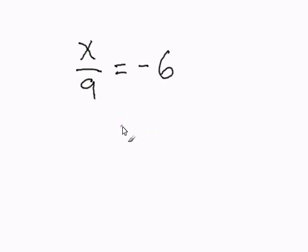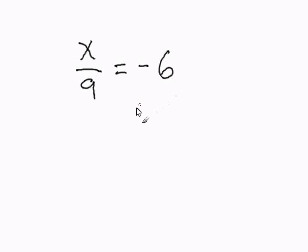Solving single step equation by multiplication. In this problem, we have x over 9 equals to negative 6. Now we must get x by itself to solve for x, so we have to get rid of 9.